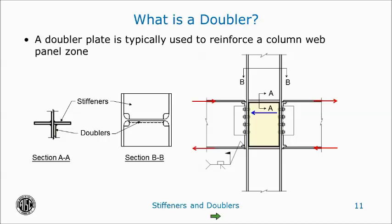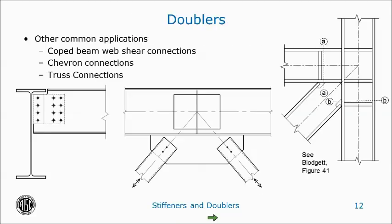At lateral beam-to-column flange moment connections, the top flange of a beam acts one way and the bottom flange of the beam acts the other way. It is that distance between these flanges in the column that is subject to an increased shear load due to the flange forces — this area is what we call the column panel zone. You can certainly use doublers for other applications, such as to reinforce a coat beam, for shear at chevron connections, a chevron brace connection very similar to a beam-to-column flange moment connection, or a welded up truss connection. Omar Blodgett's book, Design of Welded Structures, has an excellent example on how to design for doublers at welded up truss connections.